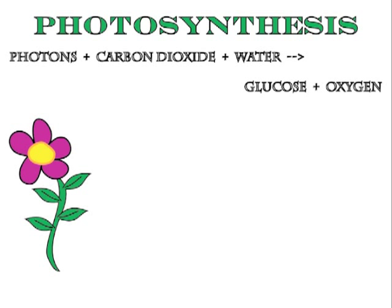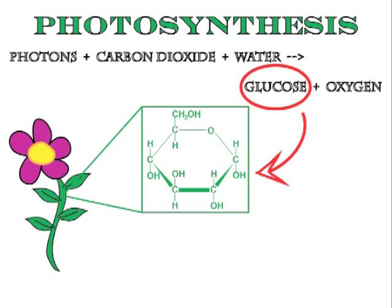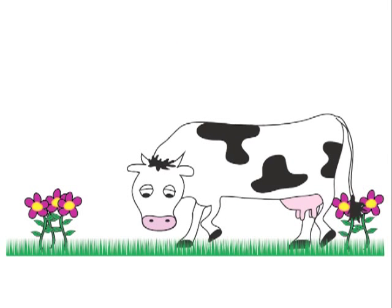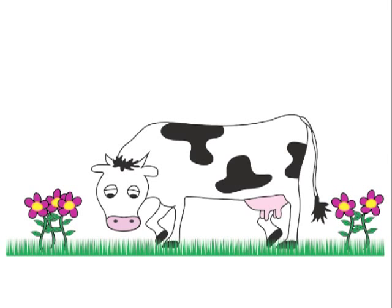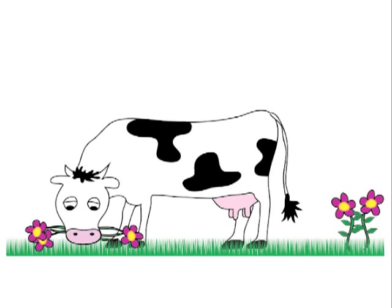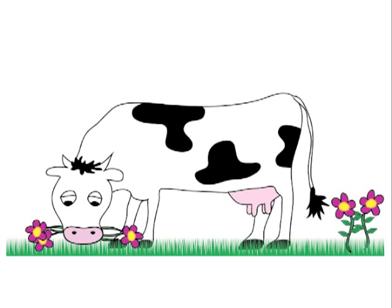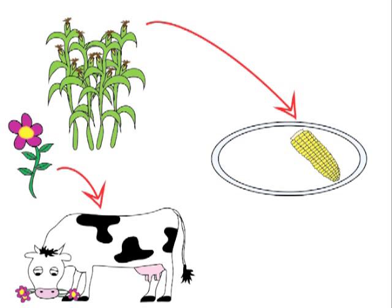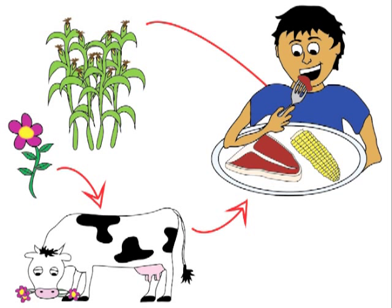During photosynthesis, energy from photons is stored in the tissues of these organisms as chemical bonds in glucose or sugar molecules. When an animal eats the plant, energy from these bonds is used as fuel for growth and other activities. This transfer of the energy through chemical bonds happens all the way through the food web.